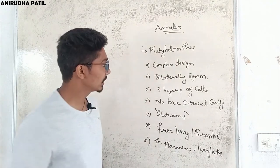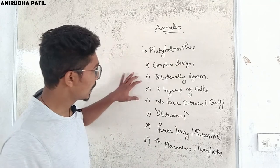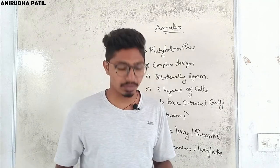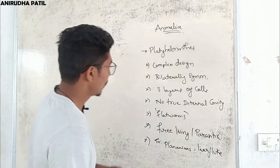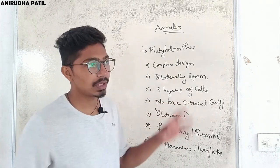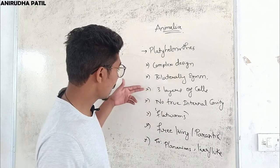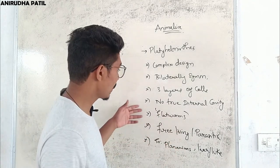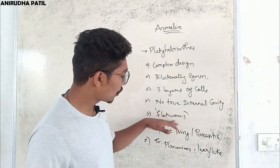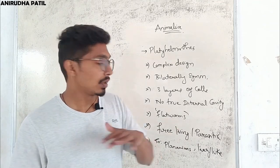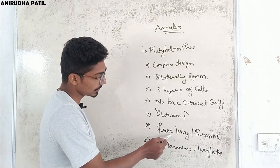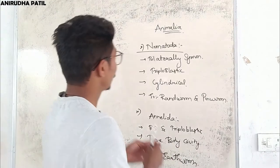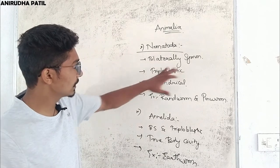The next group is Platyhelminthes. Their body design is more complex than the previous two groups. The body is bilaterally symmetrical, like our own body. They have three layers of cells, whereas the previous two groups had two layers. There is no true internal cavity where organs can be accommodated. These are called flatworms because most organisms are flat. They can be free-living, like planarians, or parasitic, like liver flukes.